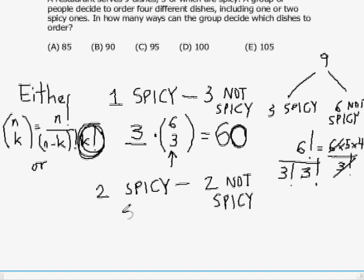We've got to order two spicy dishes. There are three to choose from and we're choosing two. And then we have to choose two not spicy dishes. There are six not spicy dishes to choose from, we have to choose two. Now, three choose two, how many ways can we choose two out of three spicy dishes? Well, I think you'll see either by using the formula or just by thinking that three choose two is equal to three.